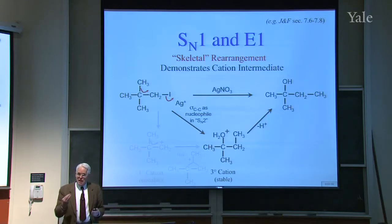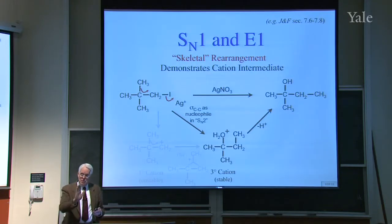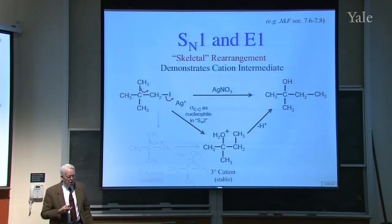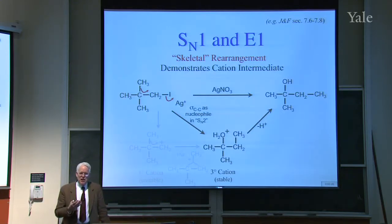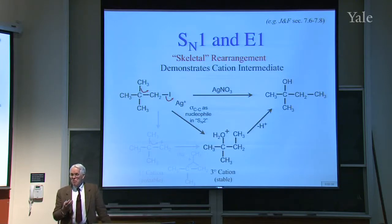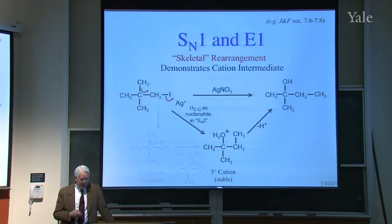The crucial thing is this rearrangement. The fact of the rearrangement shows there must have been a cation intermediate. Without that cation there would have been no means for the rearrangement. Carbon skeletons don't normally rearrange. But when you lose electrons and get these two-electron, three-center bonds, a carbon can move.